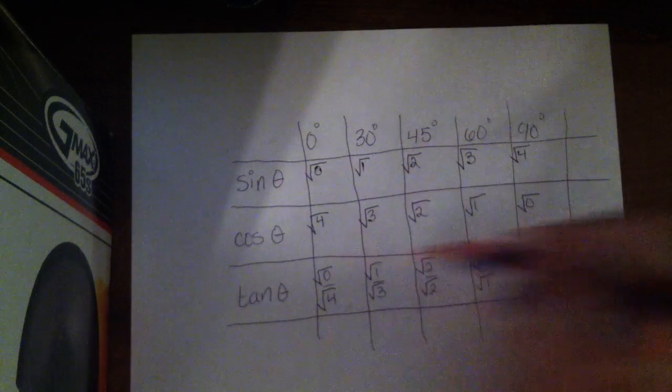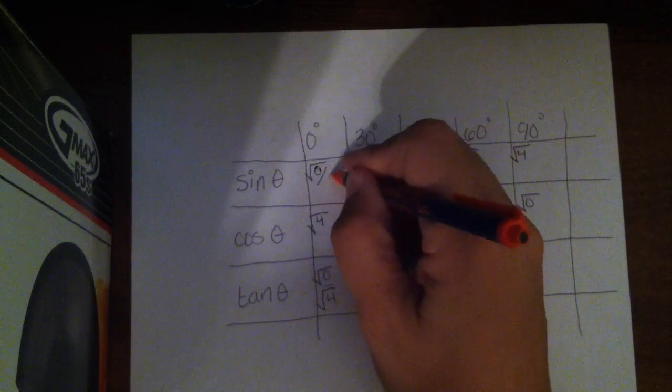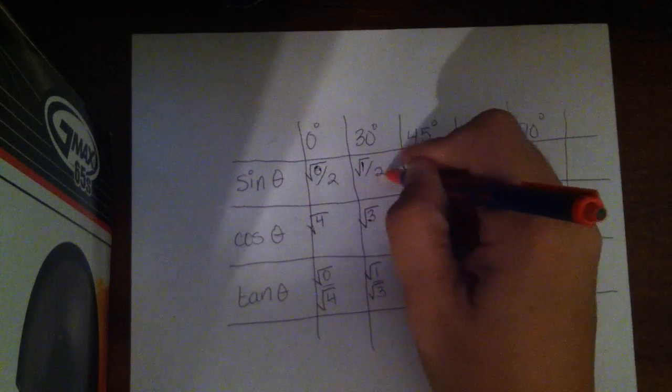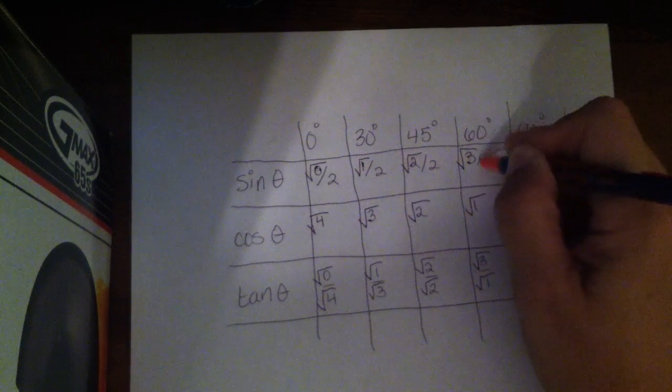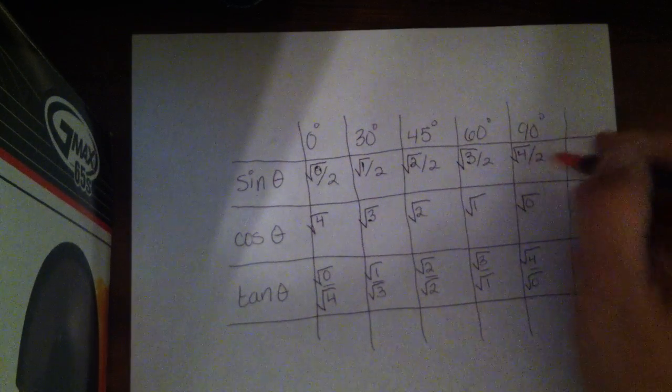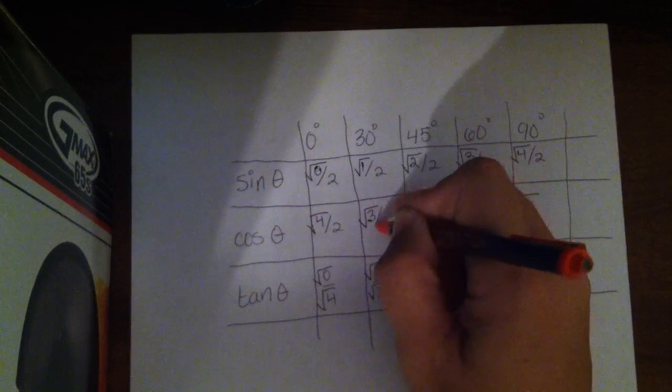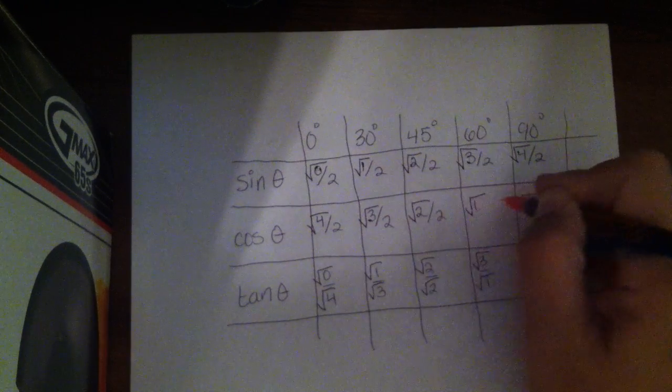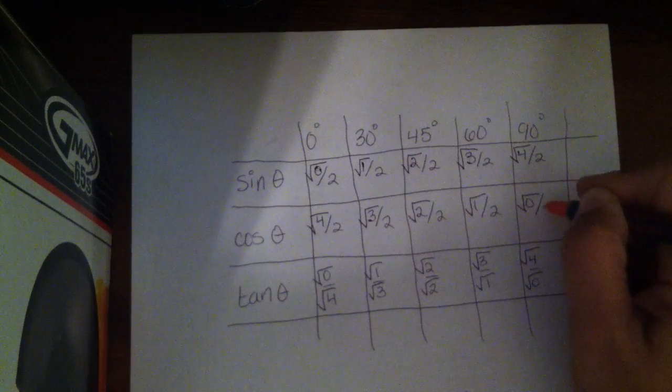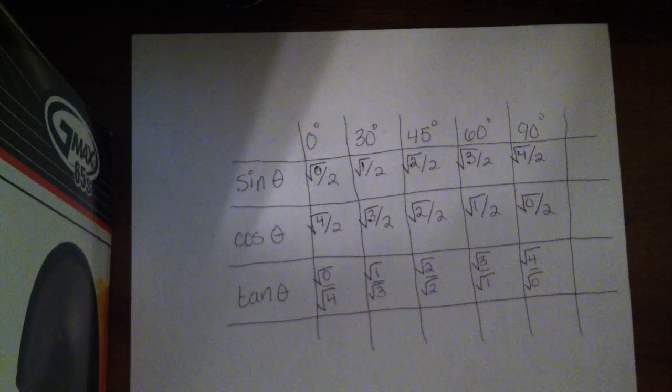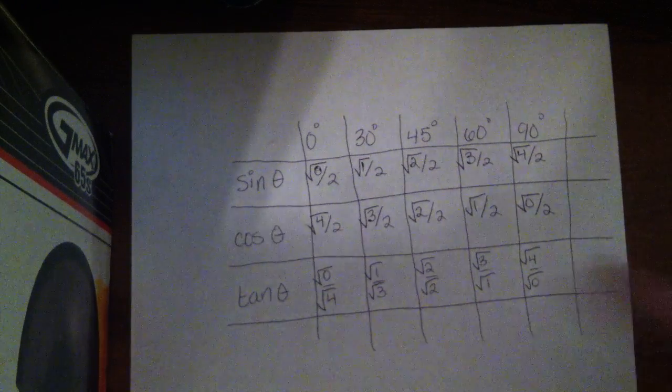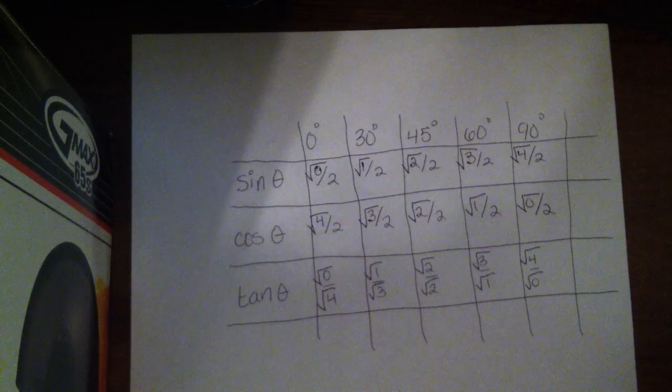Now, in your sine and your cosine rows, you're going to put everything over 2. And that is the pattern. Now, a lot of this is going to simplify, so I'm not done.